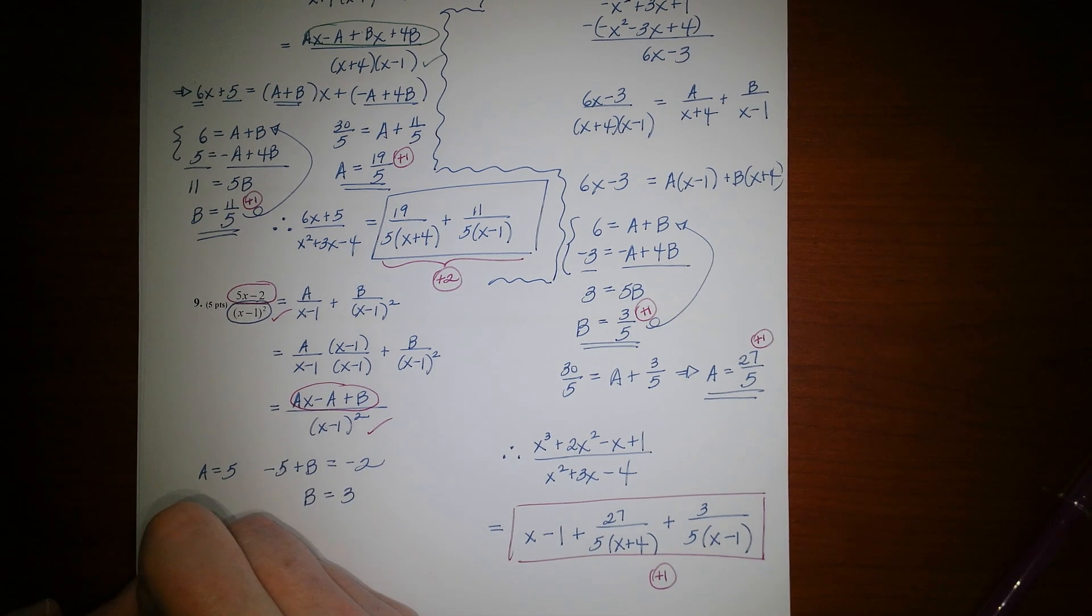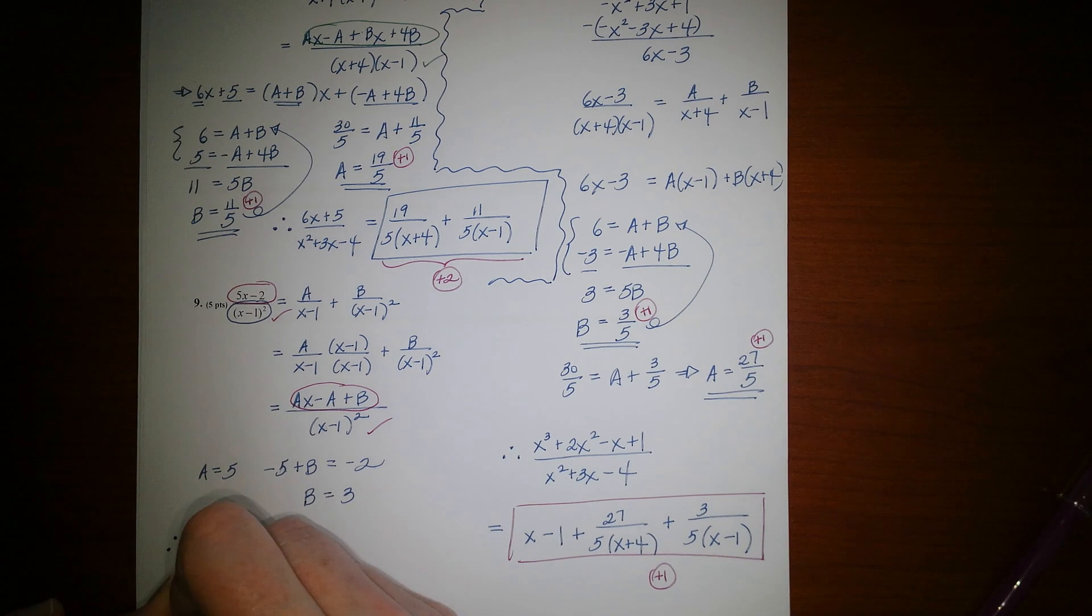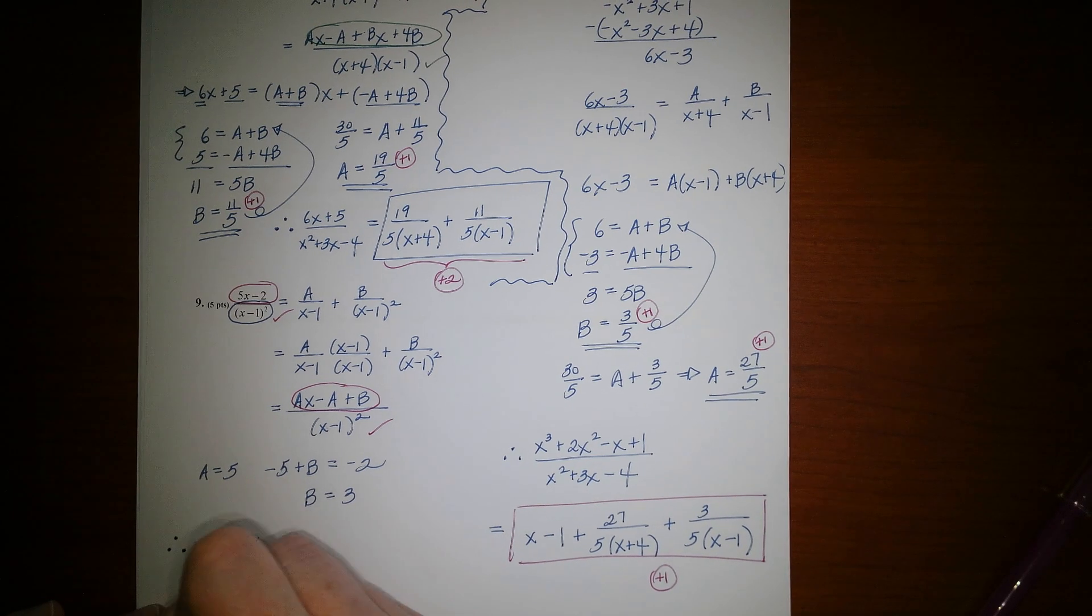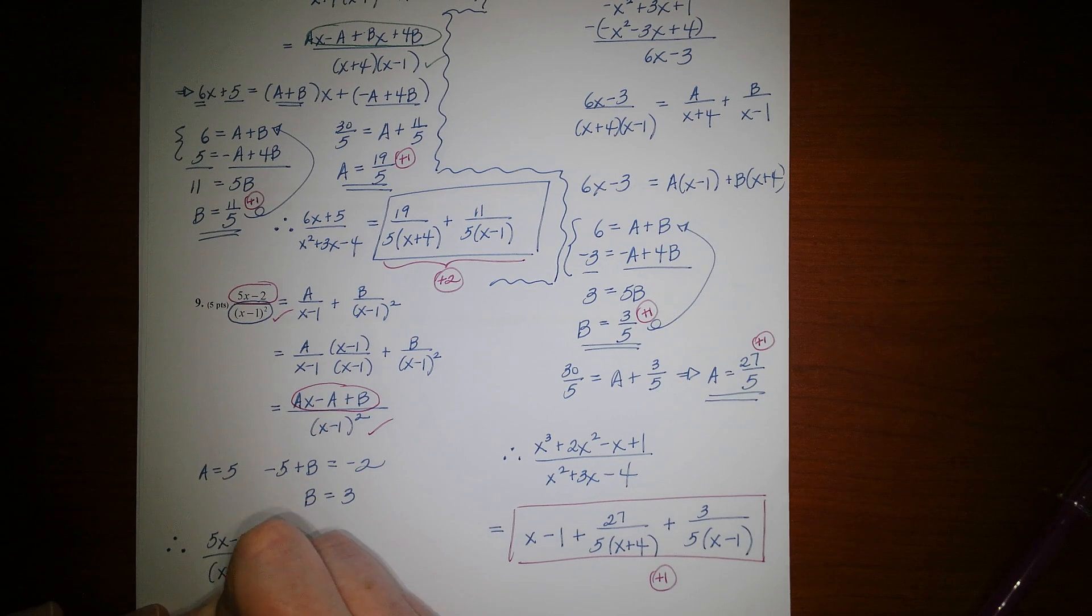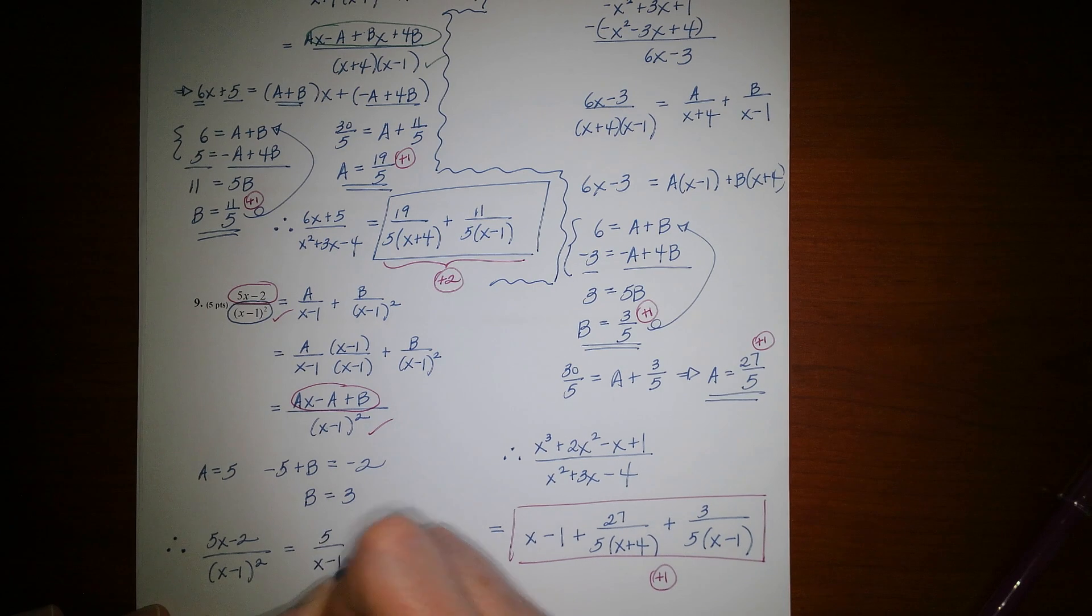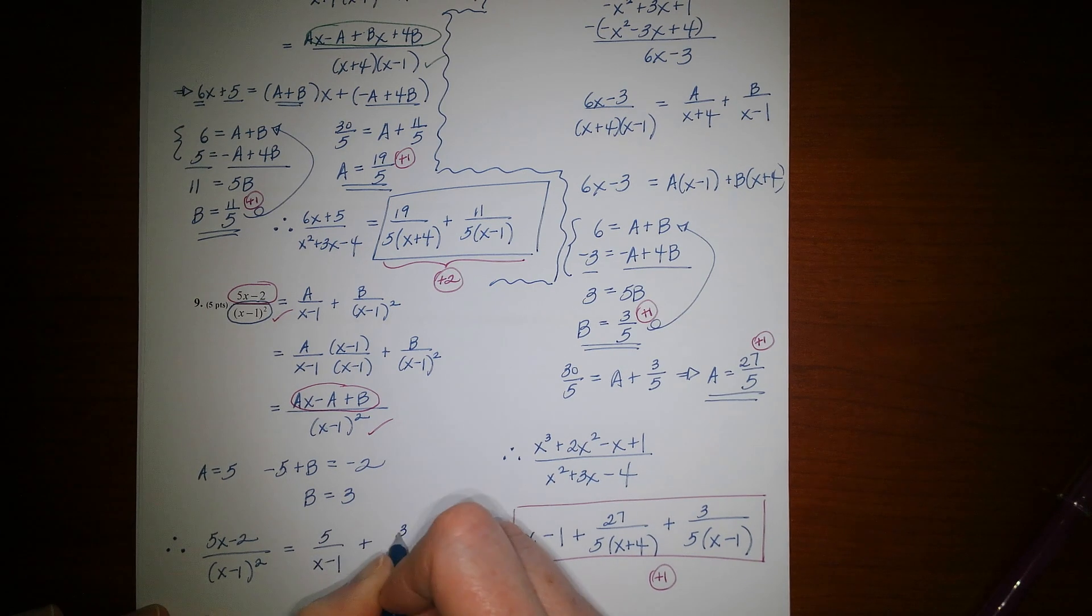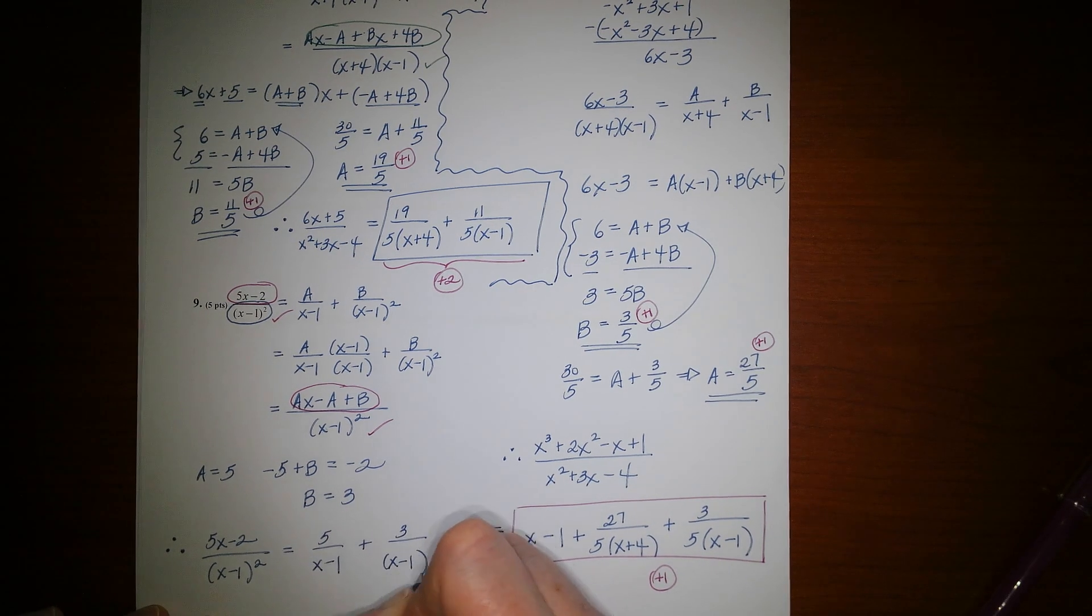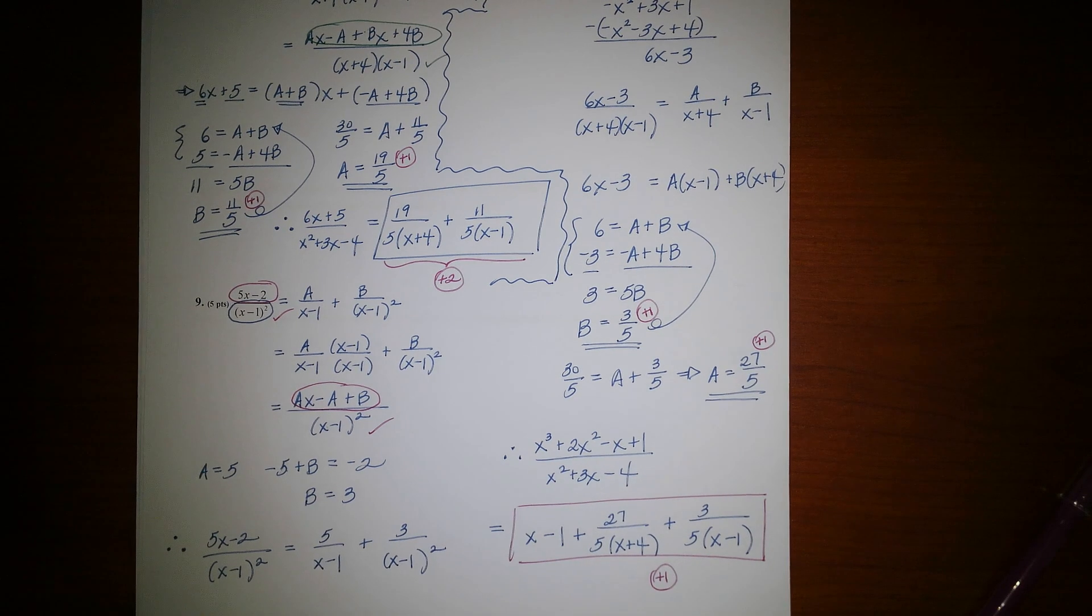So your final answer would be that 5x minus 2 over x minus 1 squared would equal 5 over x minus 1 plus 3 over x minus 1 squared. There we go. Okay.